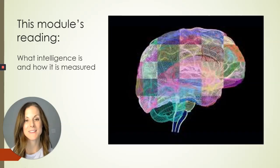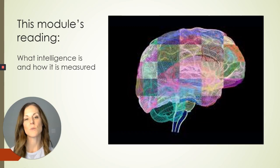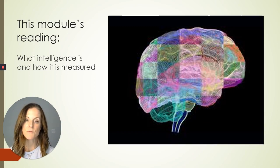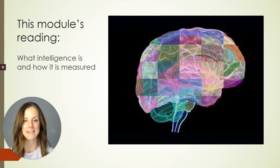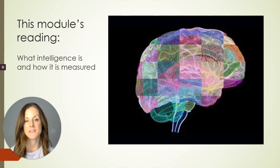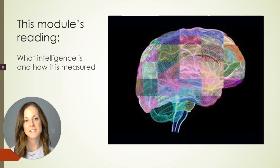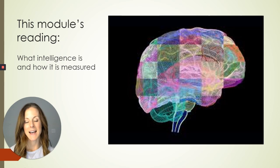Think about those different examples as you read this week's reading on intelligence. You will learn more about how we define intelligence and how we measure it. But as we move forward, it's very important that I point out a glaring oversight in this chapter. Seeking to understand and measure intelligence in its own right is a very valuable pursuit, and yet it has a very dark history in the ways in which it has been used.